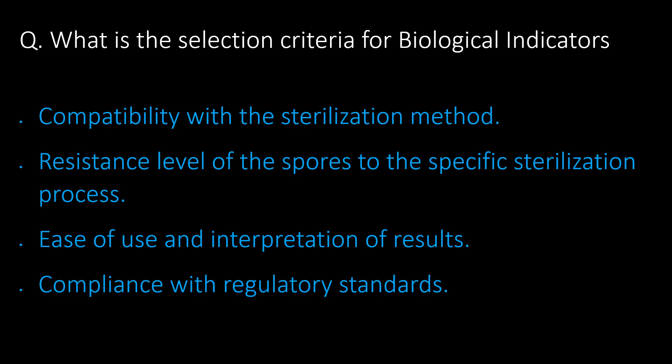What is the selection criteria for biological indicators? Four points are considered when selecting biological indicators in the pharmaceutical industry: first, compatibility with the sterilization method; second, resistance level of the spores to the specific sterilization process; third, ease of use and interpretation of results; fourth, compliance with regulatory standards.